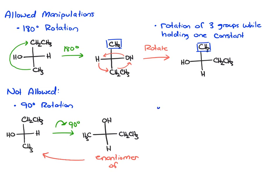Also not allowed, you can't do a horizontal or vertical flip. If you flip a Fischer projection vertically or horizontally, that moves the orientation of these groups, which again will make the enantiomer.